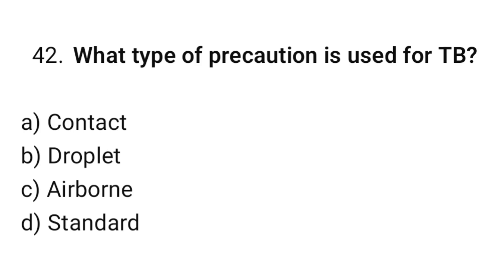Question number forty-two: What type of precaution is used for TB? The correct option is C, airborne precautions.